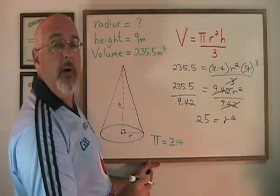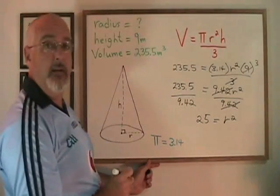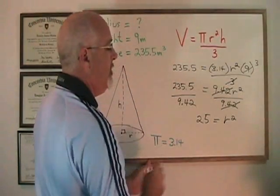We have found r squared, but we are asked for r, the radius. So we still have a step to do. We have to find the square root of 25.